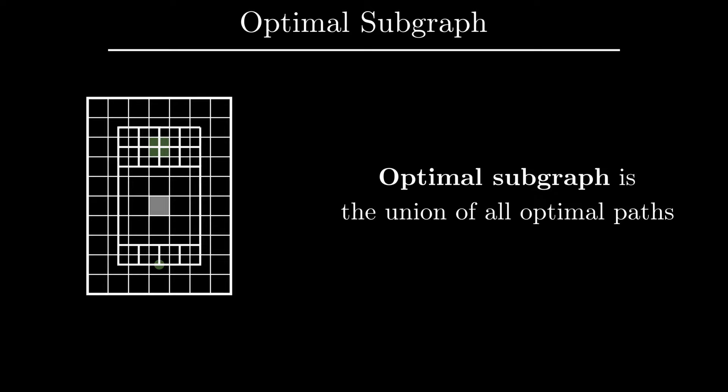Consider a very simple grid environment with a single obstacle cell. We're interested in finding paths from the robot's current position to the goal, which stay as far from the obstacle as possible, where obstacles include the boundary of the grid. There are many different paths that optimize distance to obstacle. A convenient way to collect all of them is through the concept of an optimal subgraph, which is defined to be the union of all optimal paths.